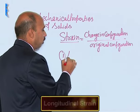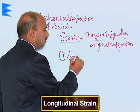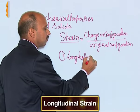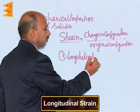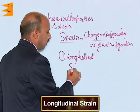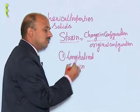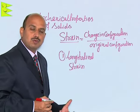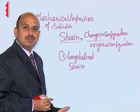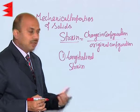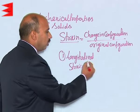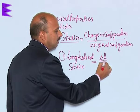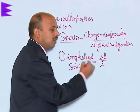The first type is longitudinal strain. In longitudinal strain, when you apply a tensile stress, there is a change in the length. So the longitudinal strain can be written as change in length divided by original length.